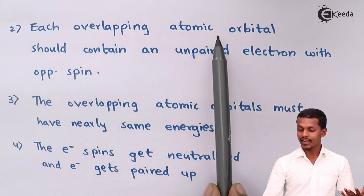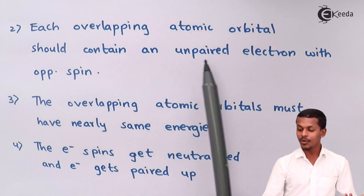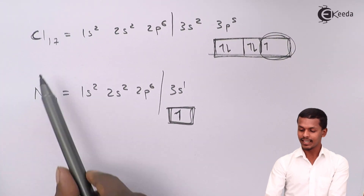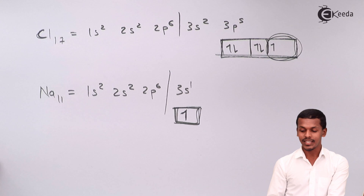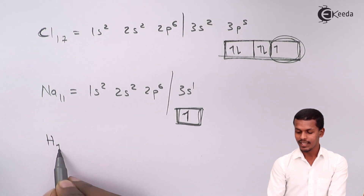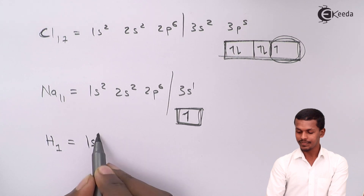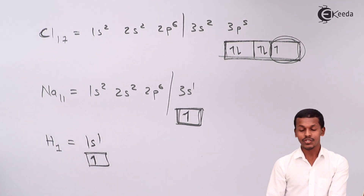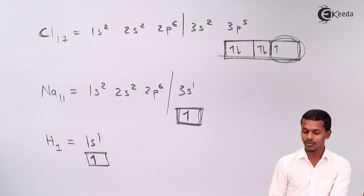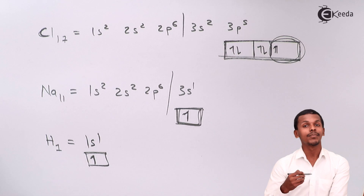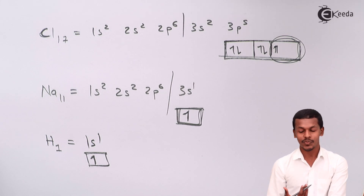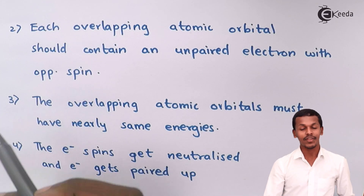The second postulate says: each overlapping atomic orbital should contain an unpaired electron with opposite spin. For example, in HCl — hydrogen has configuration 1s¹, so it has one unpaired electron. H and Cl can form a bond with each other, forming a covalent bond. But during overlapping, both electrons should be of opposite spin: one should have a spin of +½ while the other should have a spin of −½. Only then will the bond take place.